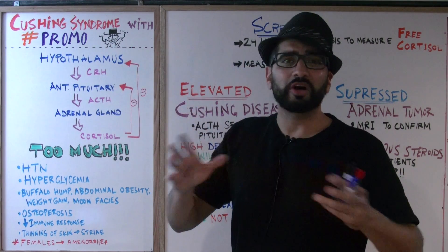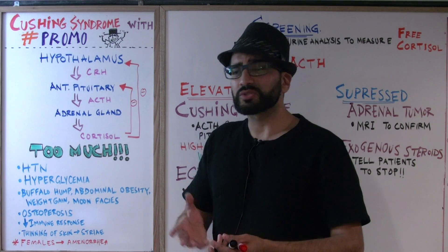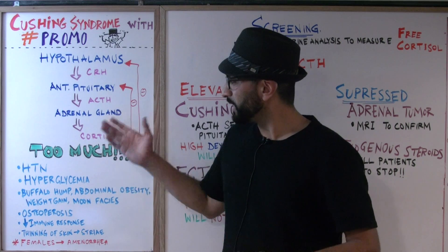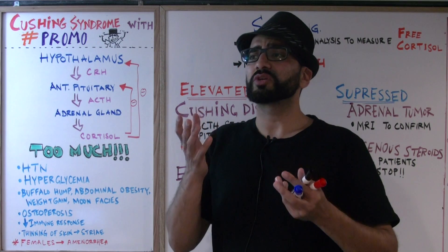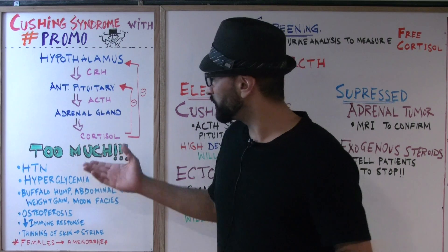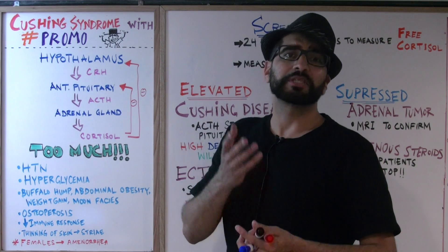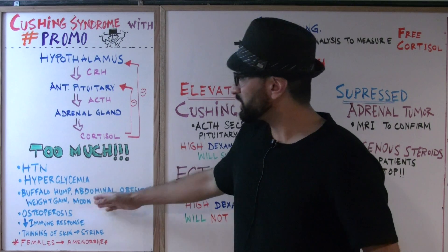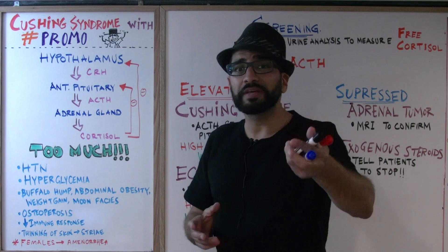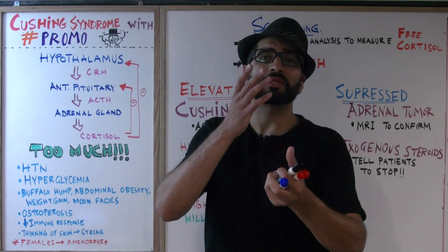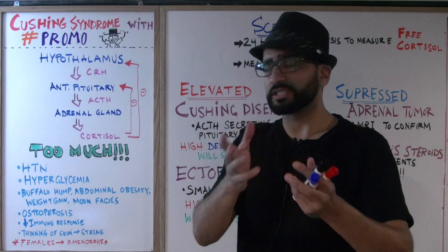Anybody with Cushing's Syndrome, whatever the cause, will present with similar signs and symptoms. An increase in cortisol causes high blood pressure and hyperglycemia — because cortisol causes gluconeogenesis and insulin resistance. Cortisol also breaks down fat via lipolysis and breaks down muscle mass via proteolysis. This explains the buffalo hump, abdominal obesity, weight gain, and moon facies — a feature also seen in Parkinson's disease and depression.